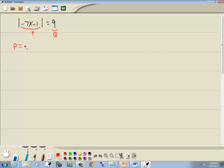Our formula says p is equal to q and p is equal to negative q. Now everywhere we have a p in our formula, we'll plug in negative 7x minus 1. And everywhere we have a q, we'll plug in 9.